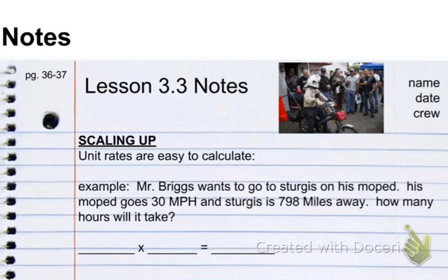Mr. Briggs wants to go to Sturgis on his moped. Now, for those of you that don't know, Sturgis is one of the most amazing motorcycle rallies get-togethers in the world. Imagine millions of bikers going to South Dakota and hanging out. Well, I've always had this dream of packing up my moped and going to Sturgis on my moped, just to see what those bikers would do. So, I only go 30 miles per hour. And Sturgis is 798 miles away. How many hours will it take me to get there?